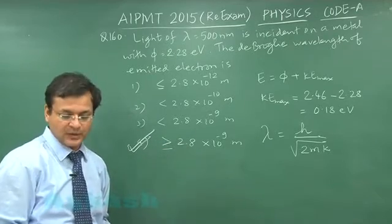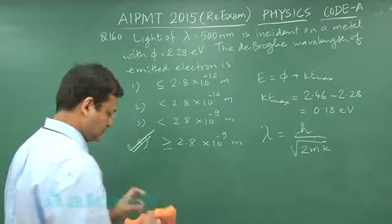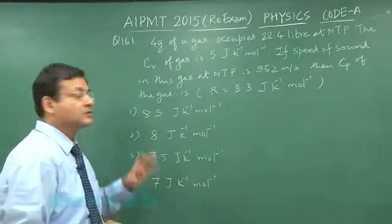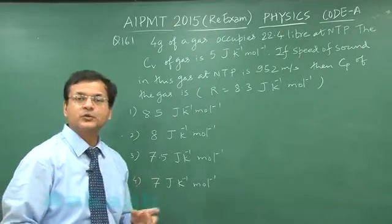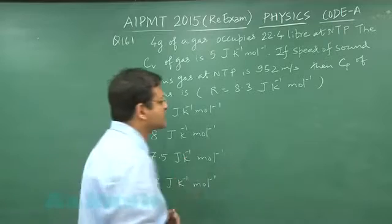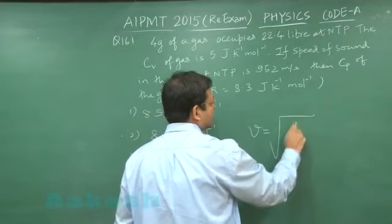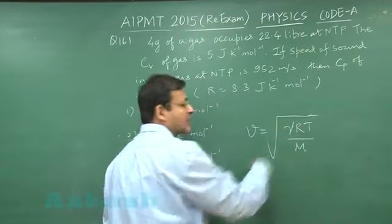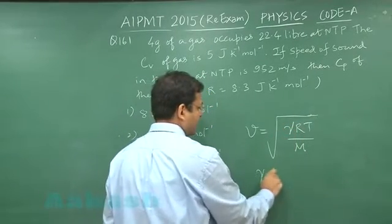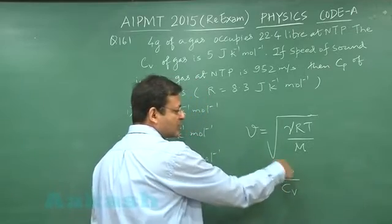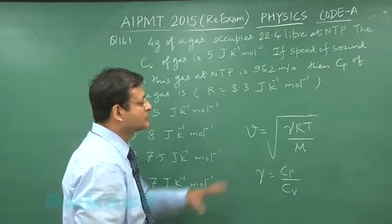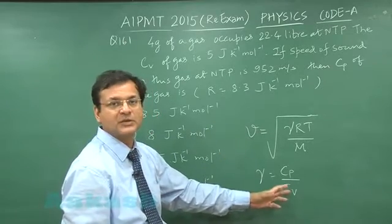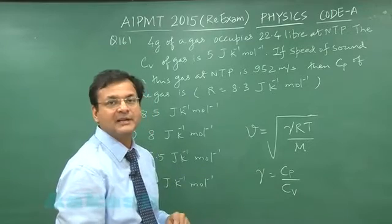Switch over to next question 161. Now this question 161 is related to speed of sound in a gas. You have the standard formula speed of sound in a gas is v this equal to under root gamma RT by M and now see this gamma is basically cp by cv. Here in this question you are supposed to calculate this value of cp. So using this equation you have to first calculate the value of gamma and then if you substitute into this equation then you will be getting the value of cp.